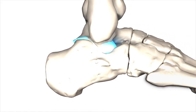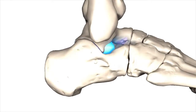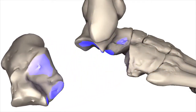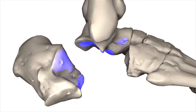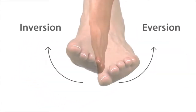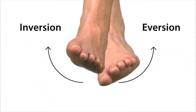The subtalar joint is between the talus and the calcaneus. There are three anterior points of contact between the talus and the proximal surface of the calcaneus. The subtalar joint allows eversion and inversion of the foot.